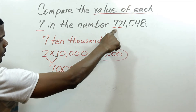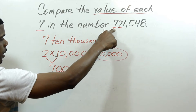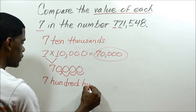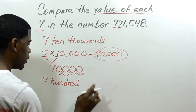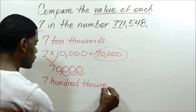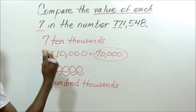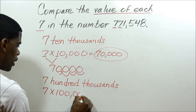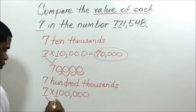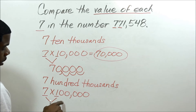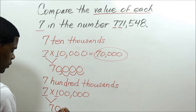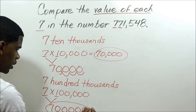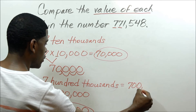My next value is the 7 next to the 10,000. So we count over — this would be the 100,000s place. So I would say: 7, 100,000s. Same way I did the 7 ten-thousands, I would simply say 7 times 100,000. I'll multiply 7 times 1 — that's 7. I count my zeros: 1, 2, 3, 4, 5. Count over to find my comma — 3. And that would be 700,000.